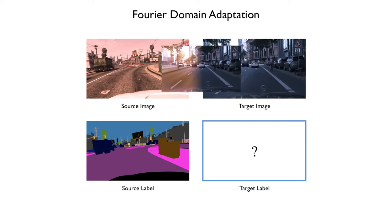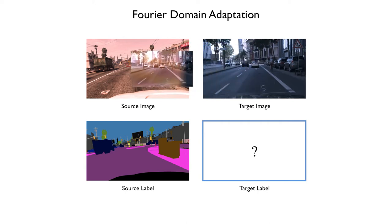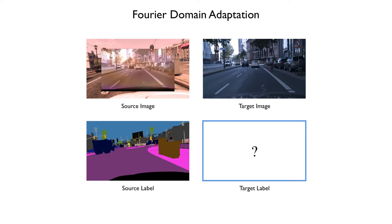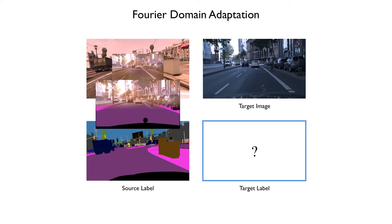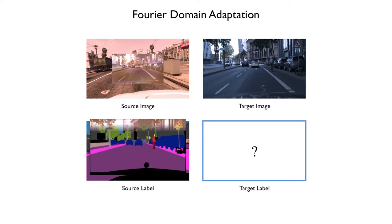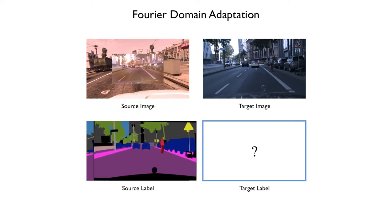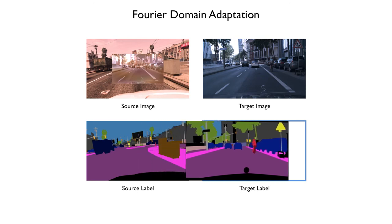FDA first transforms a target image, for which no annotation is available, onto the source domain, simply by altering the magnitude of its Fourier transform, leaving the phase untouched. Then FDA transfers the semantics back to the target domain, exploiting the source images.